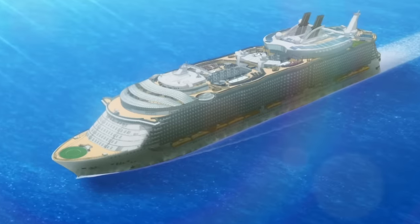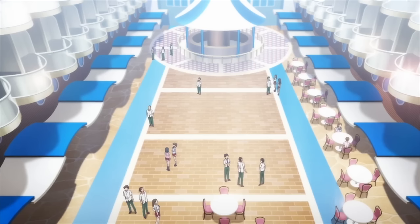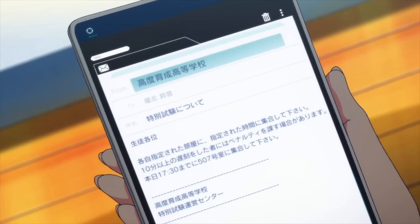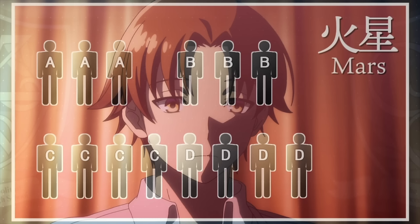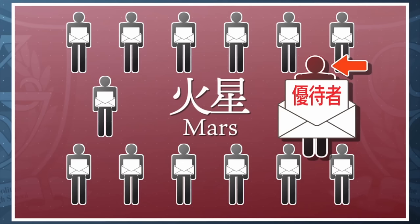Classroom of the Elite Season 2 Complete Recap. The season starts with the first years being informed of a second special test. The students are split into eight groups with students from each class. The objective is to guess the identity of a VIP in their group.